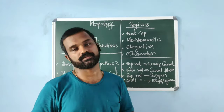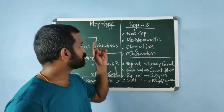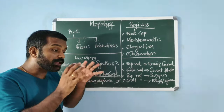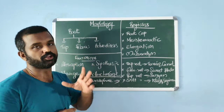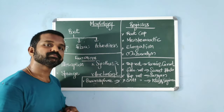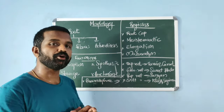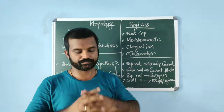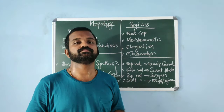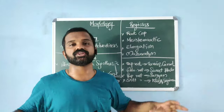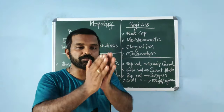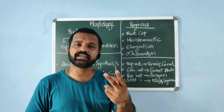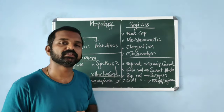In both tap root system and fibrous root system, the primary root is formed from the radicle of the embryo, whereas in adventitious root system it is not formed from the radicle. In the tap root system, a primary main root formed from the radicle and its branches — lateral, secondary, and tertiary roots — constitute the tap root system. This is commonly seen in dicots.